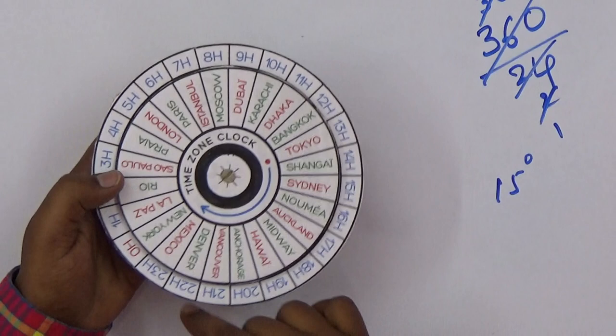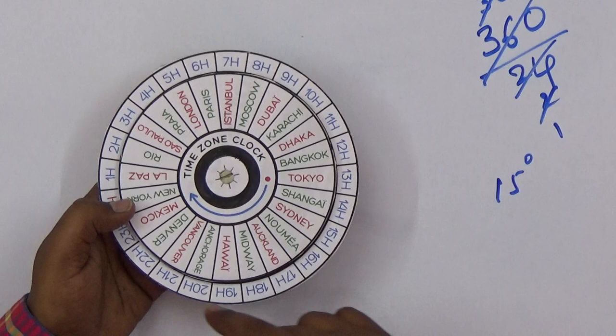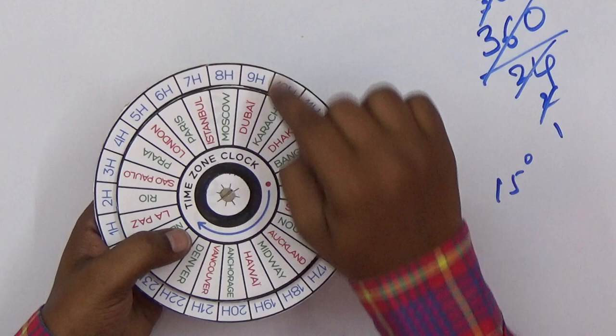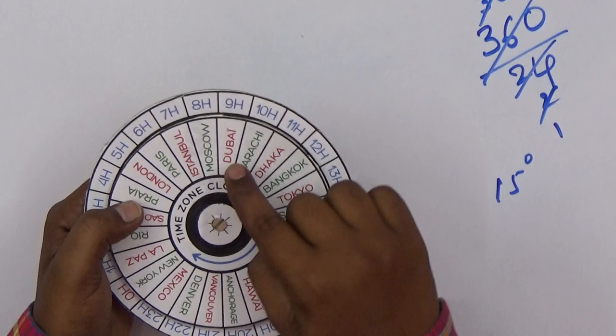This is a 24-hour clock like railway time. If it's 9 hours in Dubai, you can find the times in the remaining countries. At that time in Dubai—9 o'clock in the morning—we can find the other countries' times.